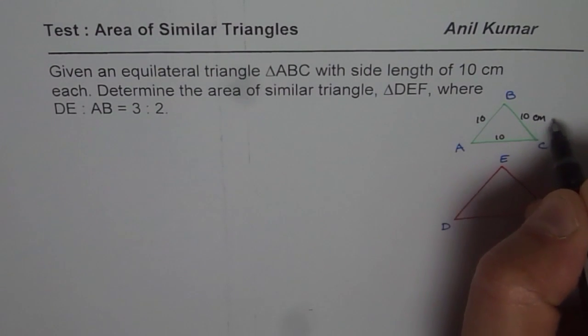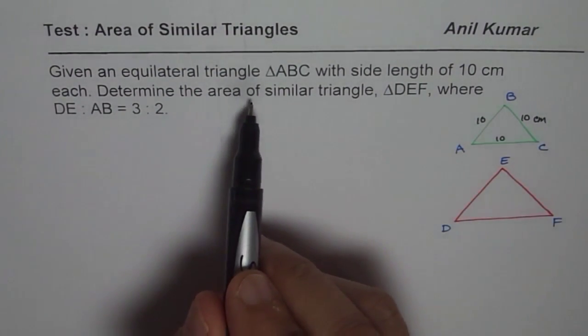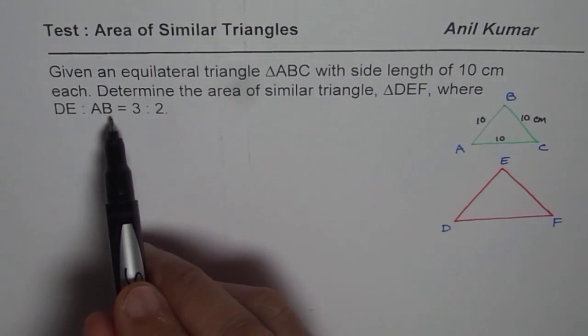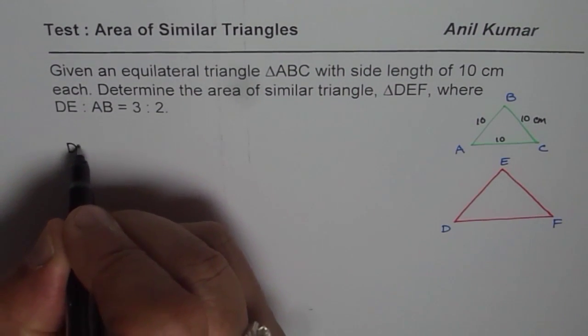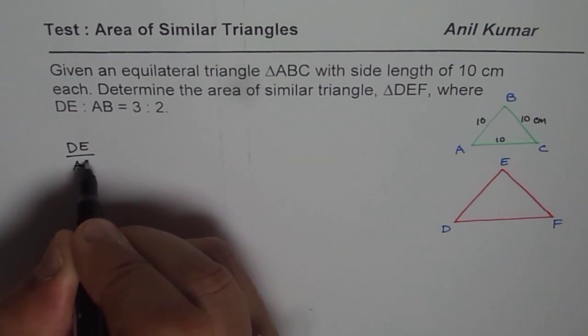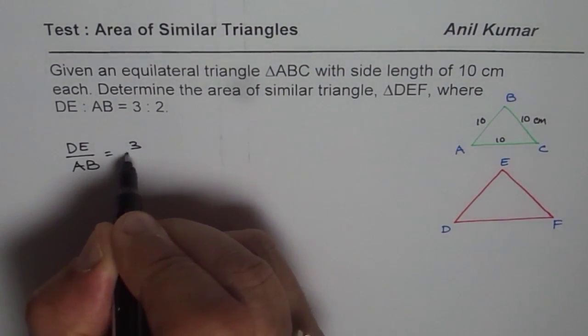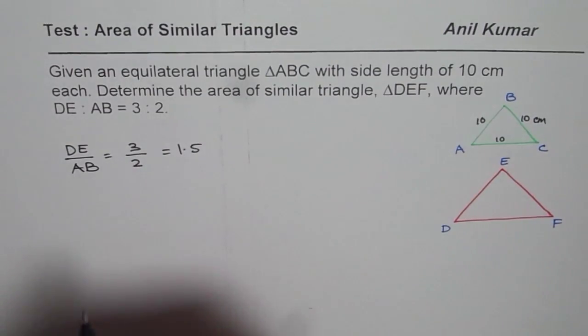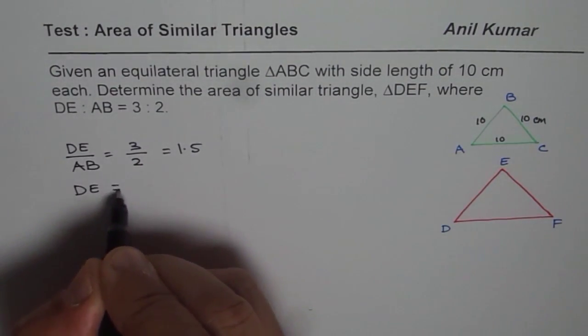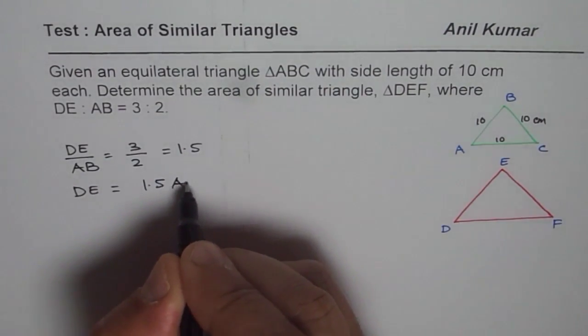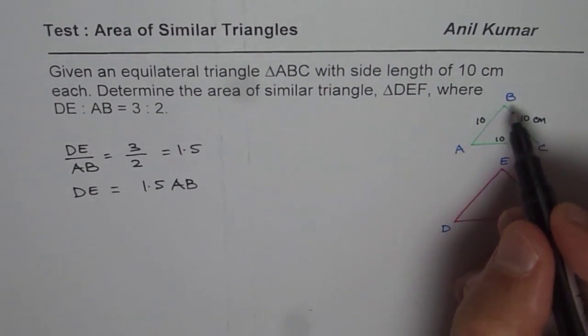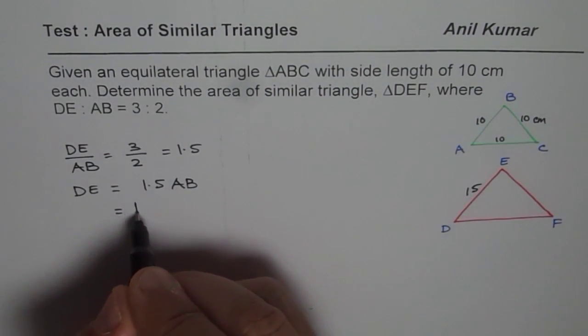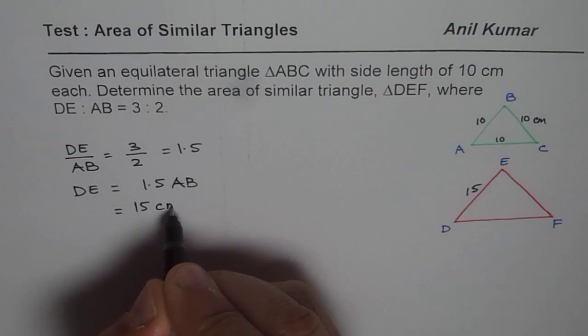Now you need to determine area of similar triangle DEF where DE to AB is 3 to 2. So what we are given here is that DE divided by AB is 3 divided by 2, so that means about 1.5. Or DE each side is equal to 1.5 times AB. Since AB is 10, it should be 15. So these sides are 15, therefore we get DE equals to 15 centimeters.